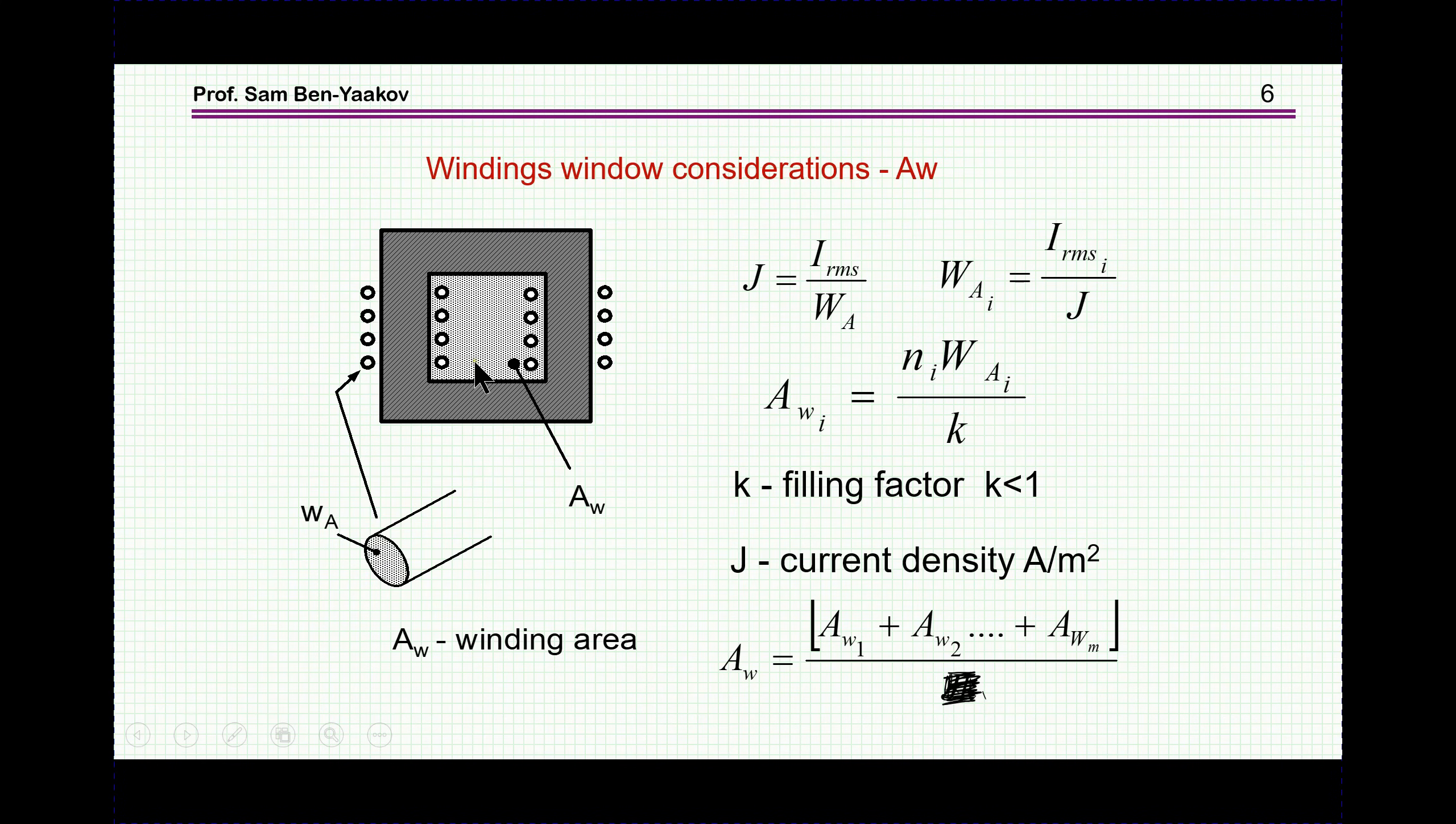Another consideration is the area of the winding and how does it relate to the parameters of the converter. We define the current density as the current over the cross-section area of the wire. So the wire's cross-section area is the I_RMS over J. J is selected according to the thermal issues, warming up, and related of course to the resistance of the wire.